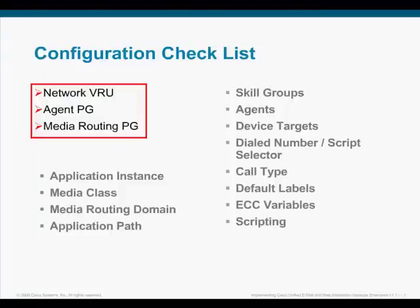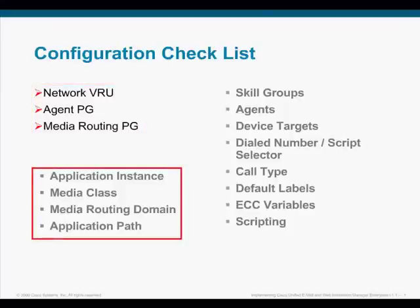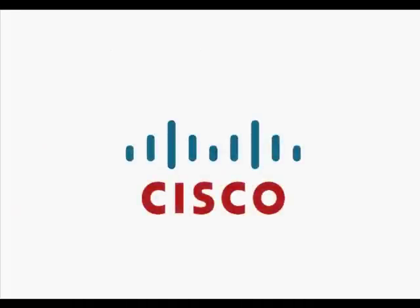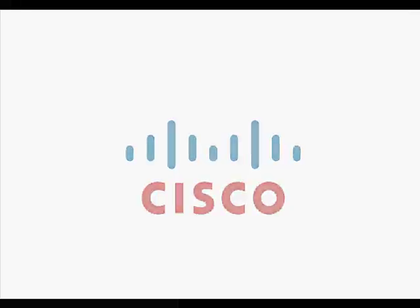At this time in your configuration, you should have your Network VRU configured, your Agent PG should be configured, and your Media Routing PG. In Module 2, we'll take a look at the Application Instance, Media Class, Media Routing Domain, and Application Path. To be continued.